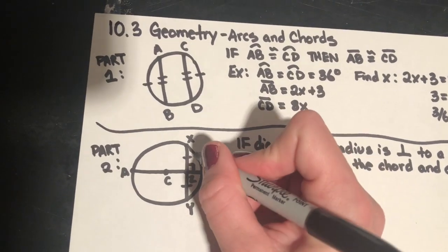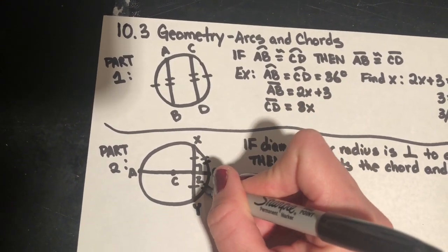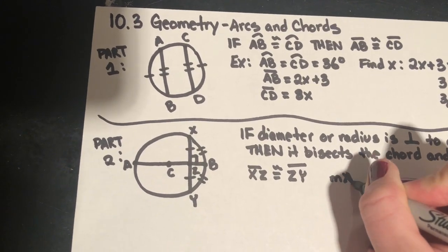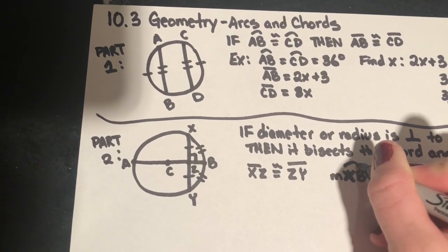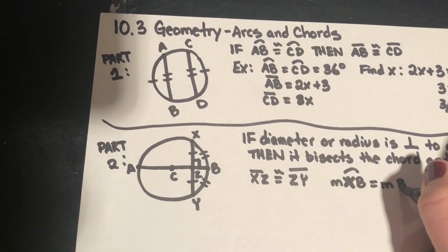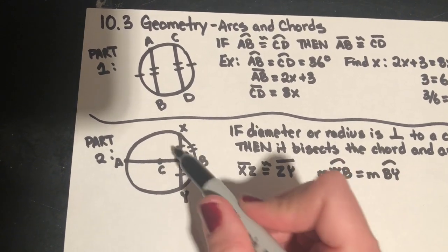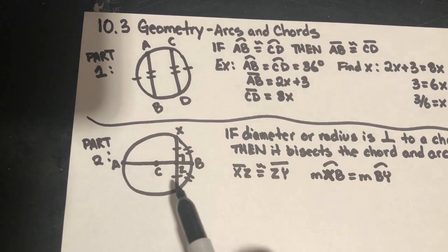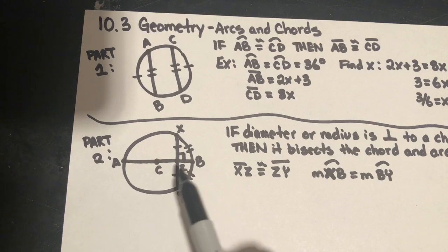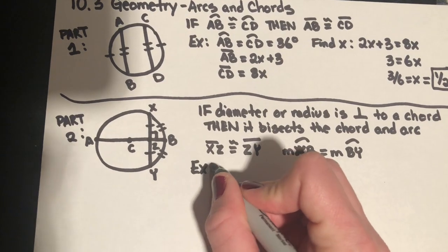It also means that the arc is bisected. So arc XB is equal to the measure of arc BY — both the arcs are congruent and so are the chords, if and only if that is a 90-degree angle, or if the diameter or radius is perpendicular to the chord.